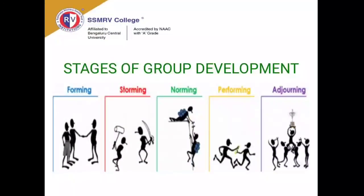Now let's look at the stages of group development. There is a picture depicting five stages clearly: forming, storming, norming, performing, and adjourning. The first stage, forming, is the primary stage of group development where members are selected from different corners of the organization based on expertise and interest. They are brought together and told they will work as one group.